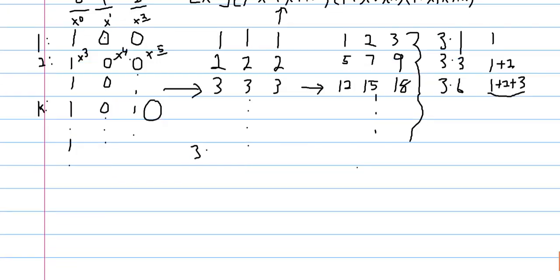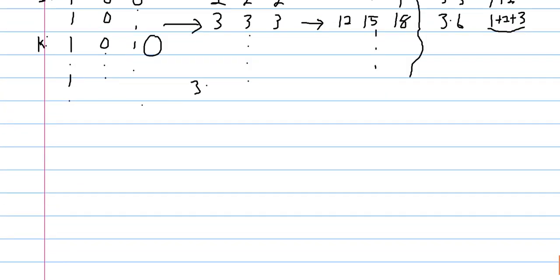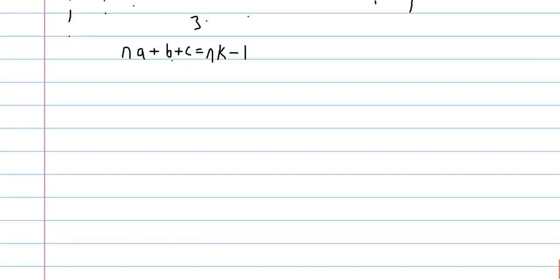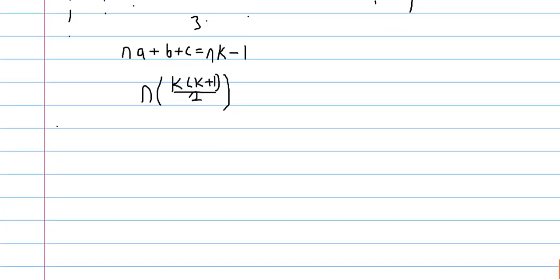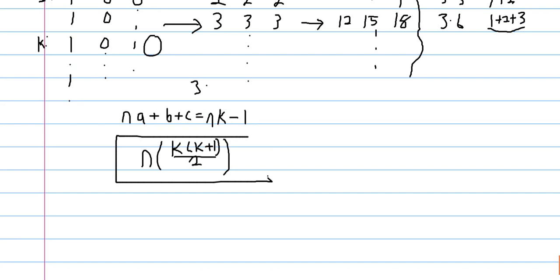And you can calculate that, but I'm just going to generalize the problem. If we have n·a plus b plus c equals n·k minus 1, then the number of non-negative integer solutions is n times k times k plus 1, all over 2. And we can see that, because this is 7 times 8 over 2. So this is the answer to our generalized problem.